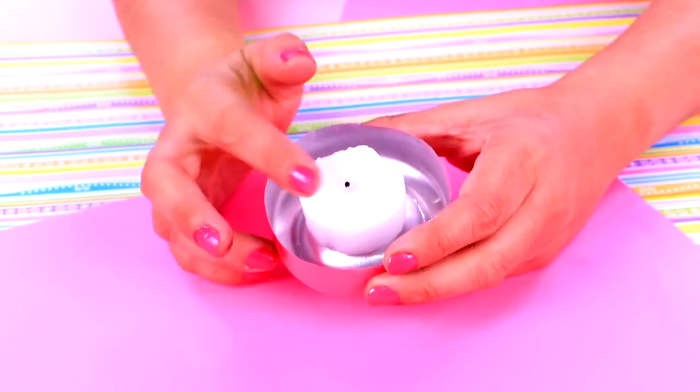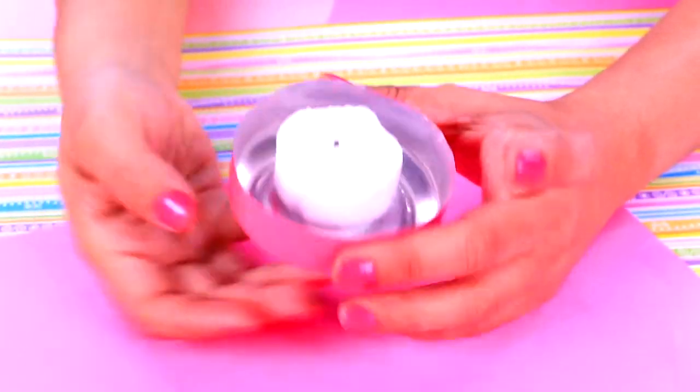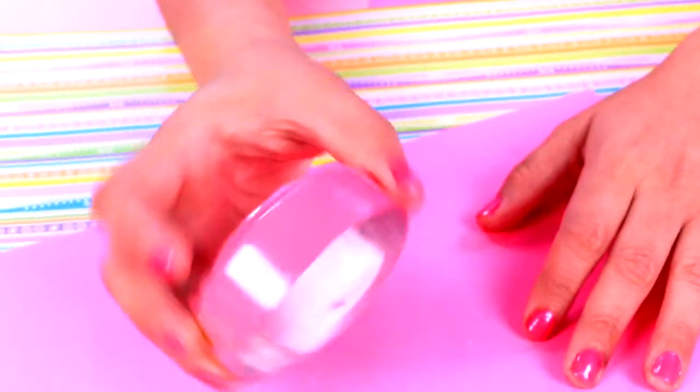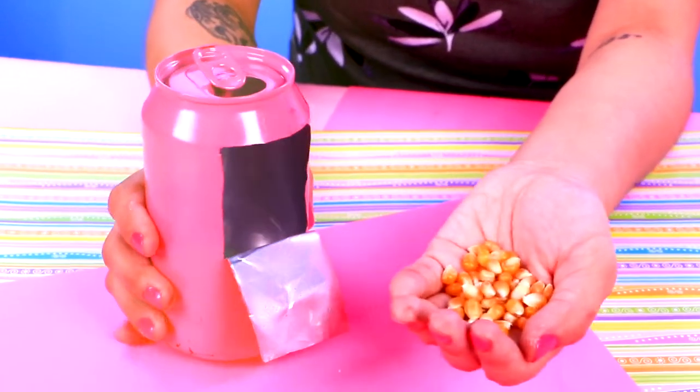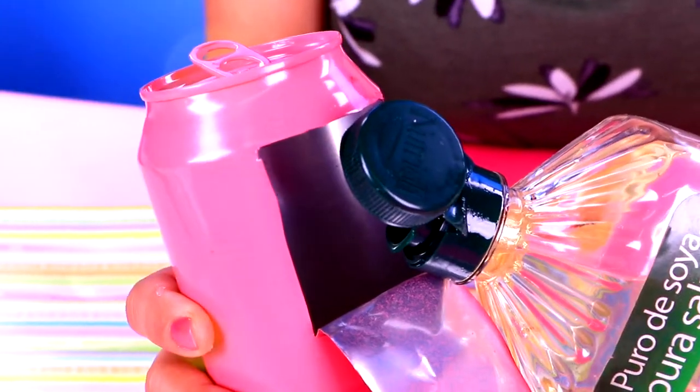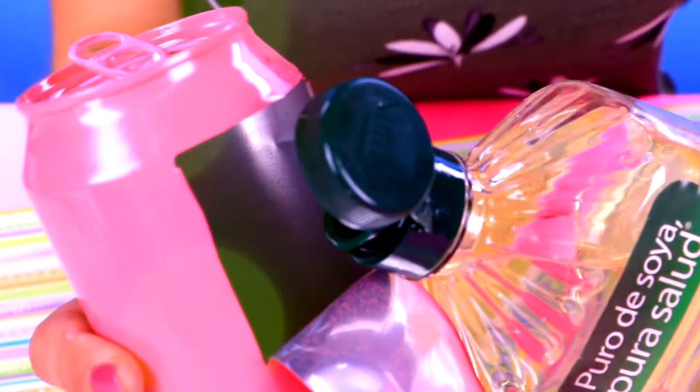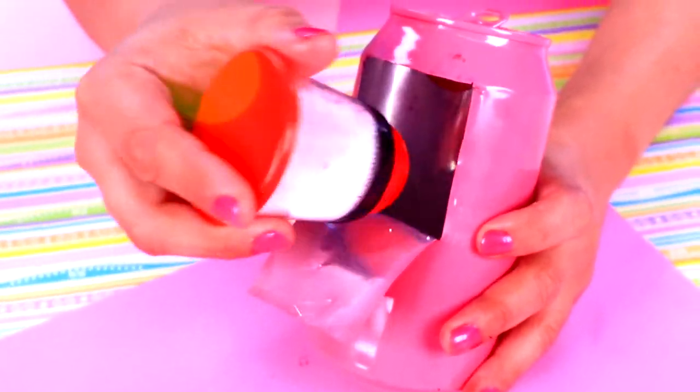So, we attach a small candle to this part of the machine. This is going to help us cook the popcorn. Make sure to glue the candle really well so it won't fall off! Time to put the popcorn in! We'll add a small amount of popcorn inside the soda can, and we'll also add a small amount of cooking oil. Oh, and don't forget to add salt! So our popcorn tastes super delicious!